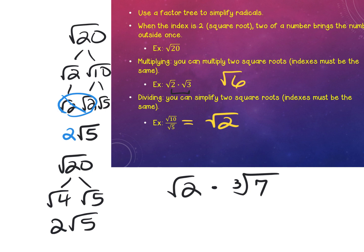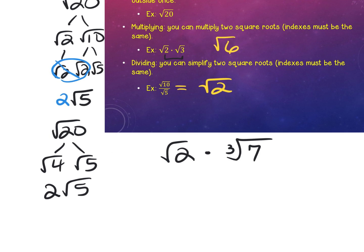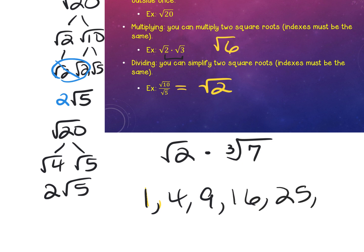If you're good at recognizing perfect squares — for example, 1 squared, 2 squared, 3 squared — and you look for factors that are these numbers, it makes breaking down the radical a little bit easier. Let's try some examples of simplifying non-perfect squares.